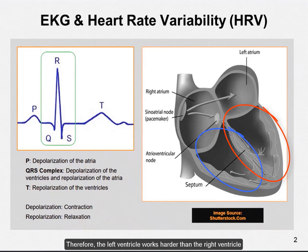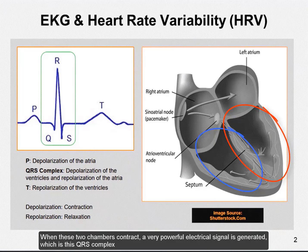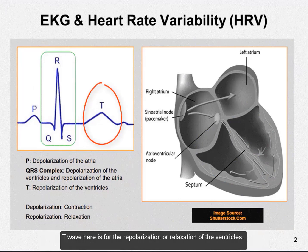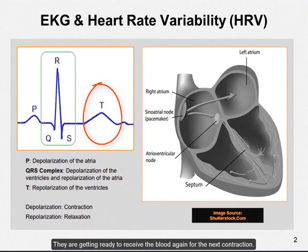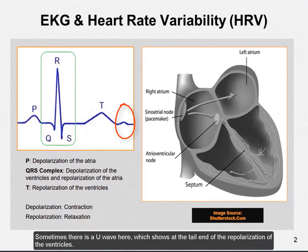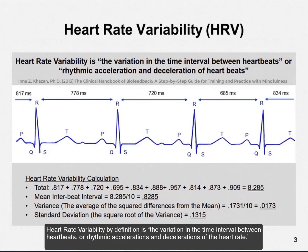Therefore, the left ventricle works harder than the right ventricle. When these two chambers contract, a very powerful electrical signal is generated, which is this QRS complex. The T-wave here is for the repolarization, or relaxation, of the ventricle — they are getting ready to receive blood again for the next contraction. Sometimes there is a U-wave, which shows the tail end of the repolarization of the ventricle.